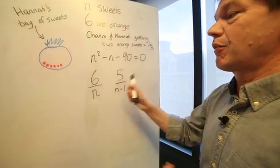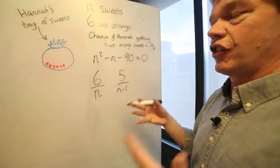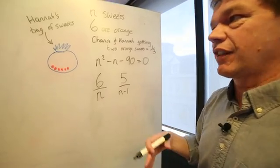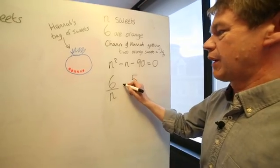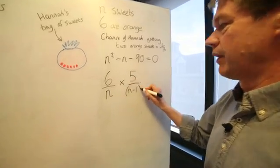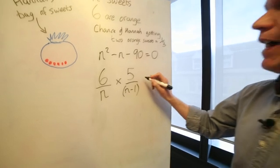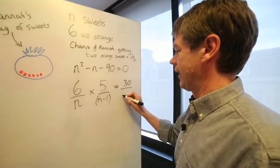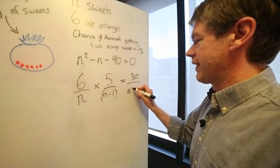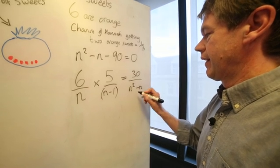So those are the two events. Now, another thing that GCSE students are being expected to know is that when you have two events like this, the chance of both of them happening can be worked out by multiplying them together. And what we get when we do that is 30 divided by, I'm going to multiply it out, N squared minus N.